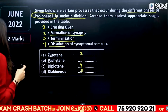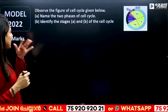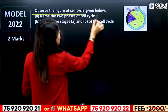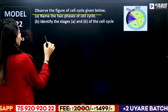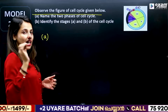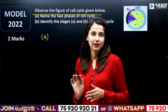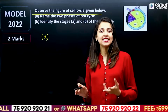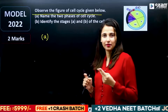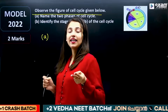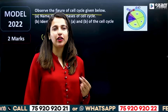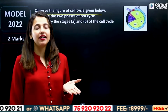This is a cell cycle question. Observe the figure of the cell cycle given below. Name the 2 phases of the cell cycle. The cell cycle has 2 stages: one is interphase and the other is M phase. You can see the two stages of mitosis.